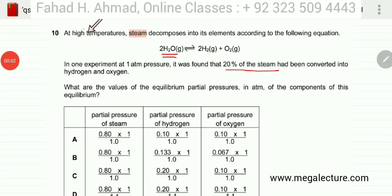The following question reads that at high temperatures steam decomposes into its elements according to the following equation. So there's water decomposing into H2 and O2 and in one experiment at one atmosphere pressure, let's mark this pressure as well because that's important for finding or calculating equilibrium partial pressures. The question states that 20% of the steam had been converted into hydrogen. So 20% of the steam has reacted. That's the only information that's given.